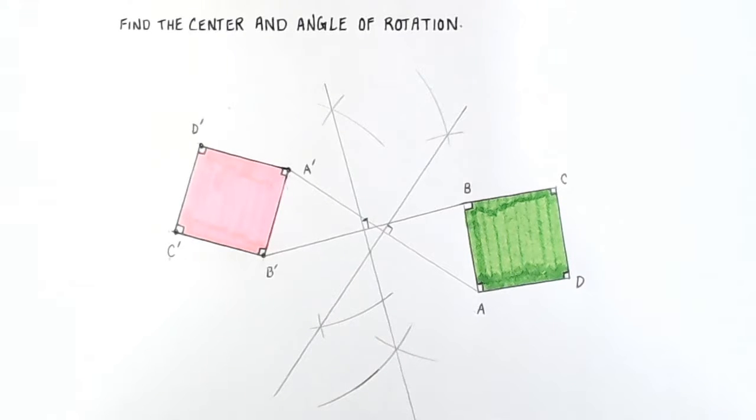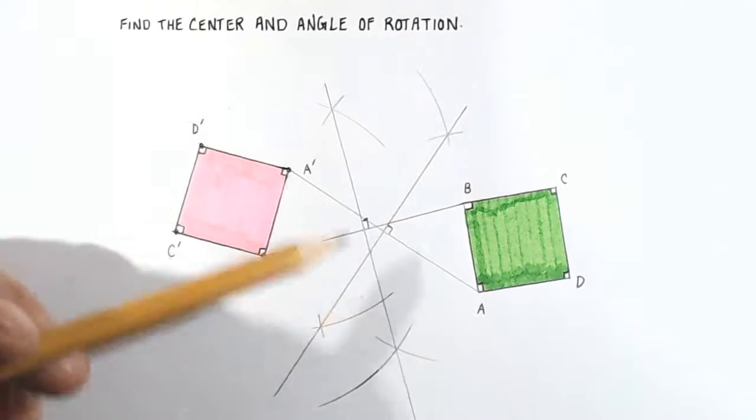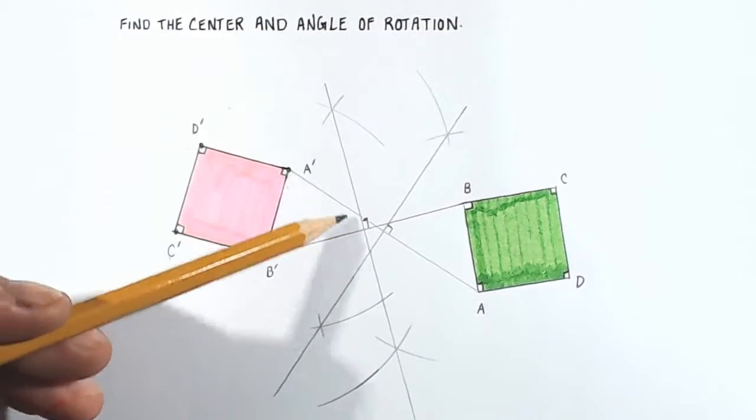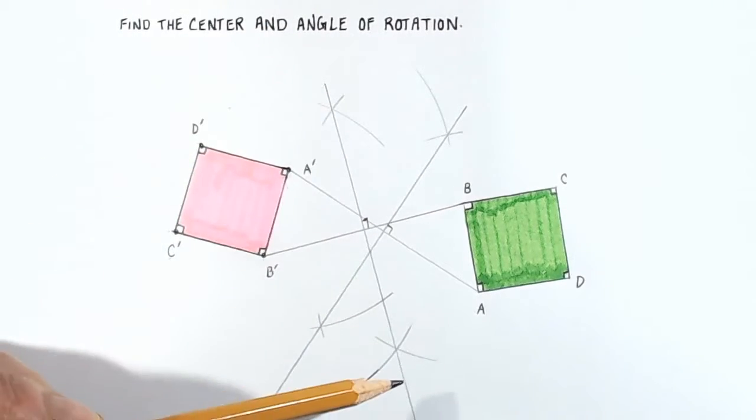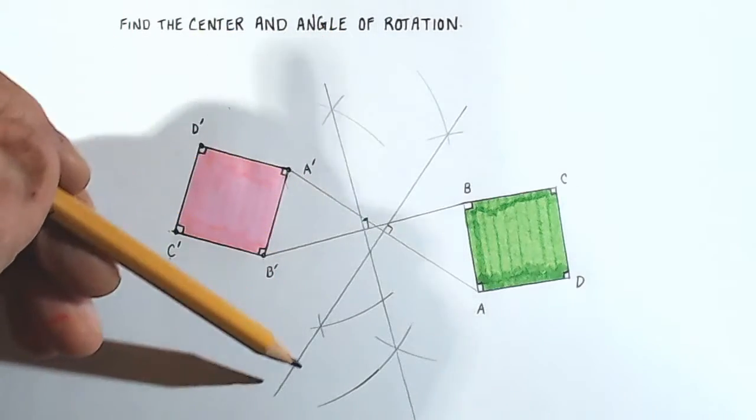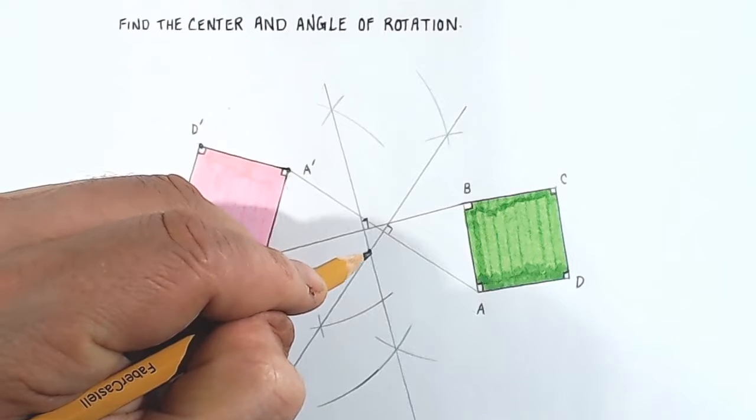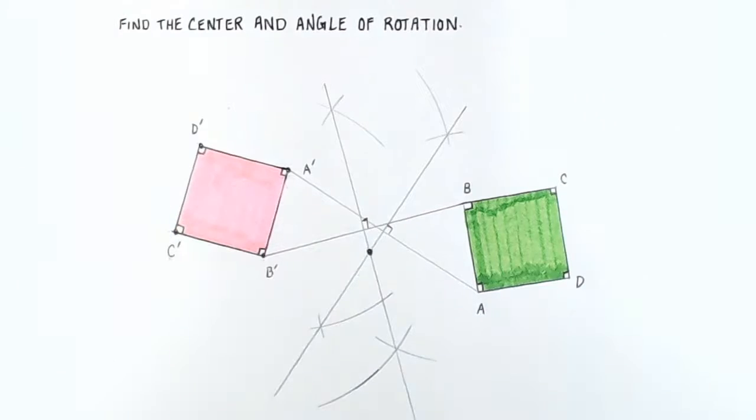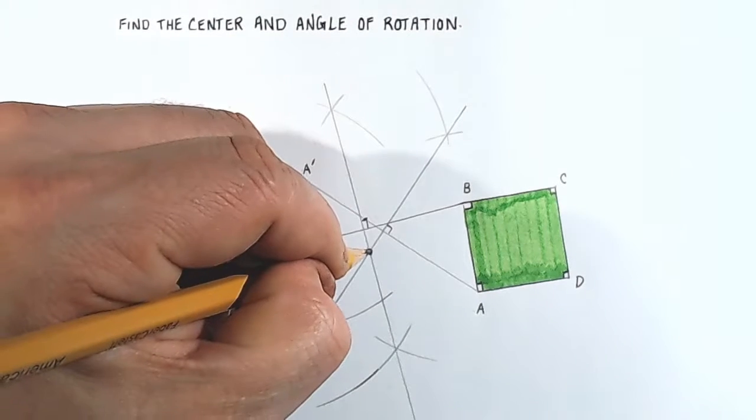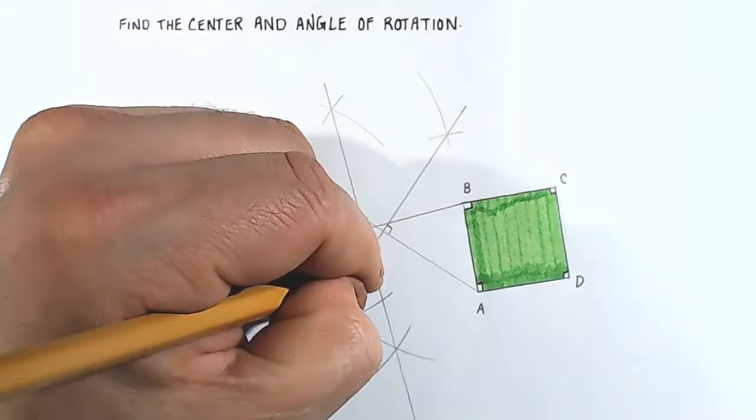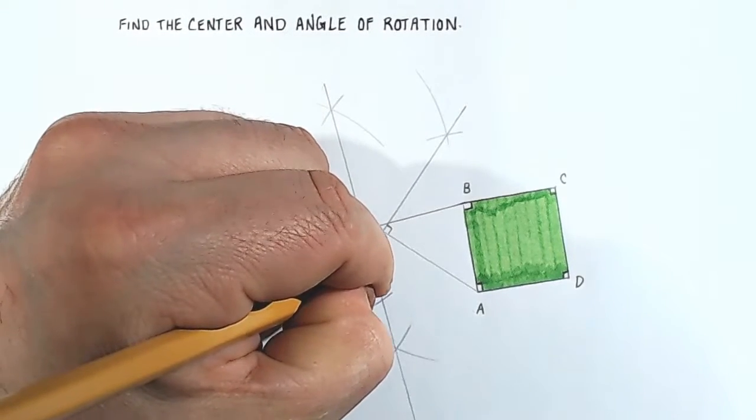So these lines are perpendicular and represent 90 degree angles. And what I'm looking for is the point at which the two perpendicular bisectors intersect. So if you look carefully, I know there's a jumble of lines on the page, but our two perpendicular bisectors, this one here and this one here, intersect right here. So this point of intersection of our perpendicular bisectors is the center of rotation. Okay, so we'll call that point P, the center of rotation.